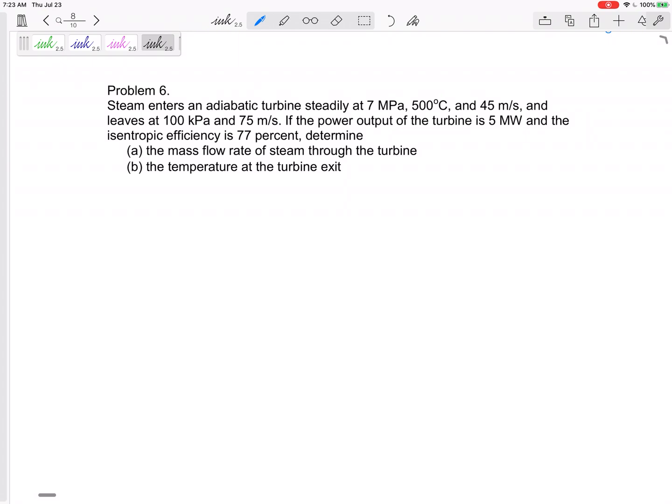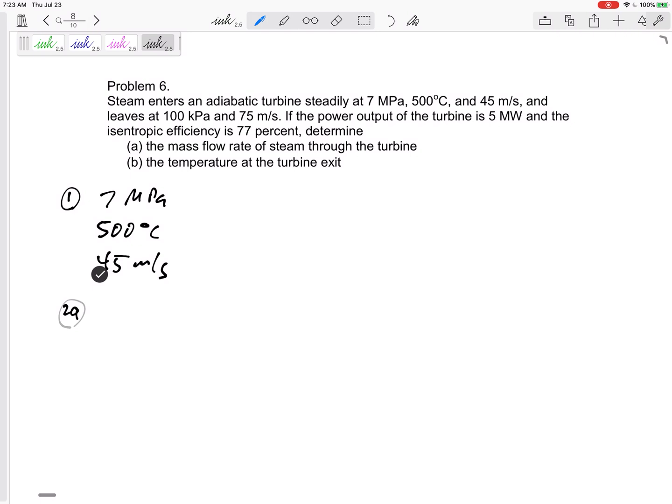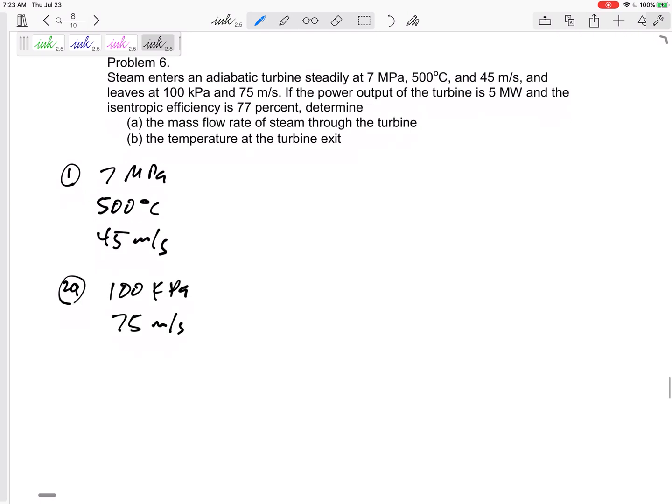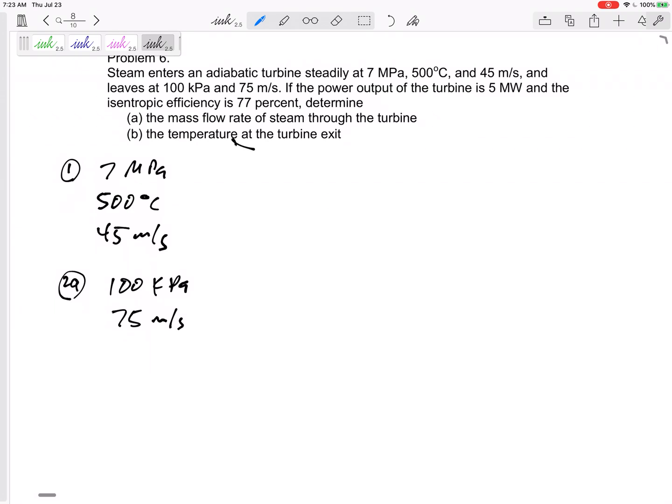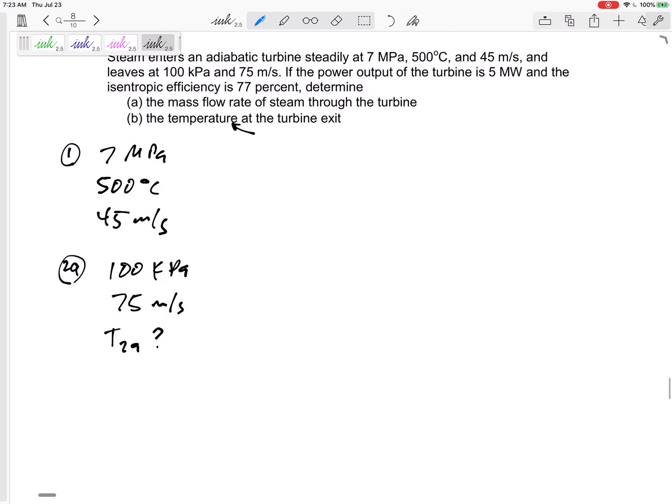Okay, I like to do this: state 1 is 7 MPa, 500 degrees C, 45 meters per second. State 2 actual is 100 kPa, 75 meters per second. I don't know the temperature; I think that's what it's asking for, T2 actual.